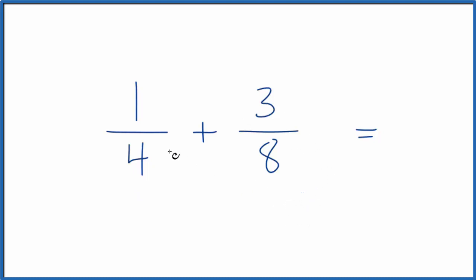First off, we have to get the denominator. When we're adding fractions, we need to get the denominator, the number on the bottom, to be the same. We need a common denominator. To do that, I know that 2 times 4 would give me 8.